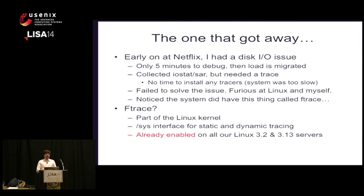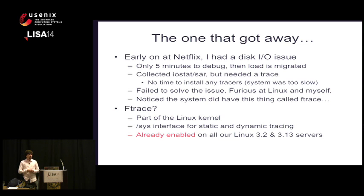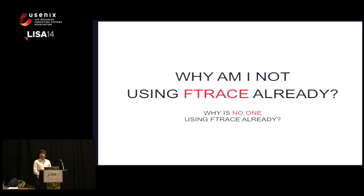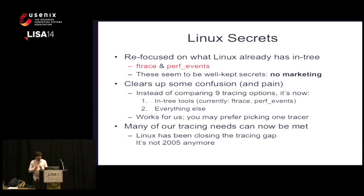But I noticed the system did have this thing called ftrace. I hadn't really used ftrace before — ftrace is the weird stuff under /sys that you can echo 1 to various files to turn on tracing and echo 0 to turn it off. About eight people in the room have used ftrace. ftrace is actually pretty cool — it's part of the Linux kernel, and as I discovered, ftrace was available on all of the Netflix instances. I just didn't have the tools built on top of it or the experience with it.